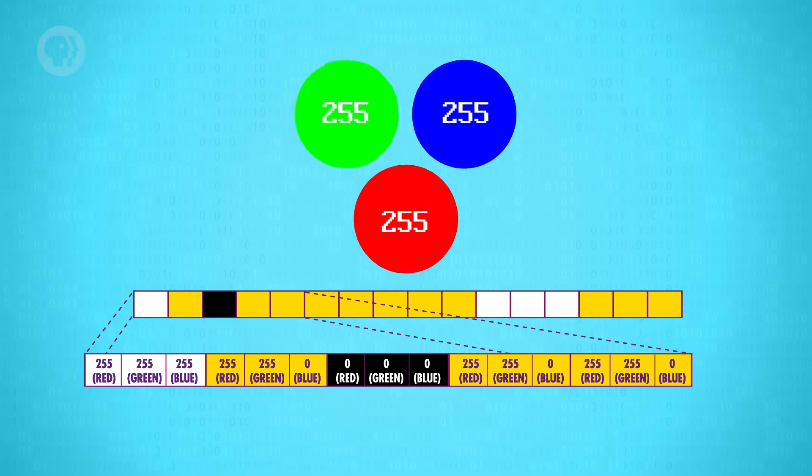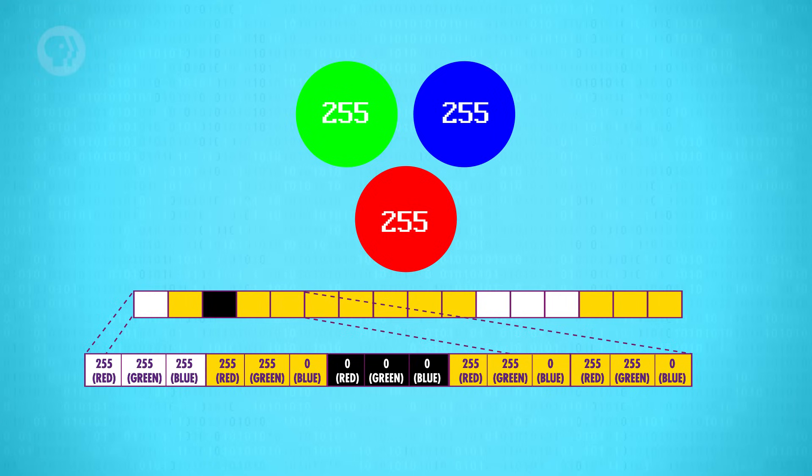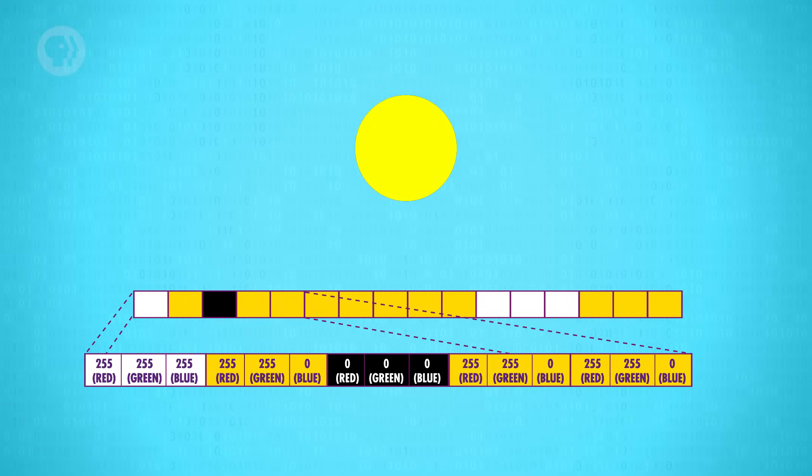If you mix full intensity red, green, and blue – that's 255 for all three values – you get the color white. If you mix full intensity red and green, but no blue – it's 0 – you get yellow. We have 16 pixels in our image, and each of those needs 3 bytes of color data. That means this image's data will consume 48 bytes of storage.